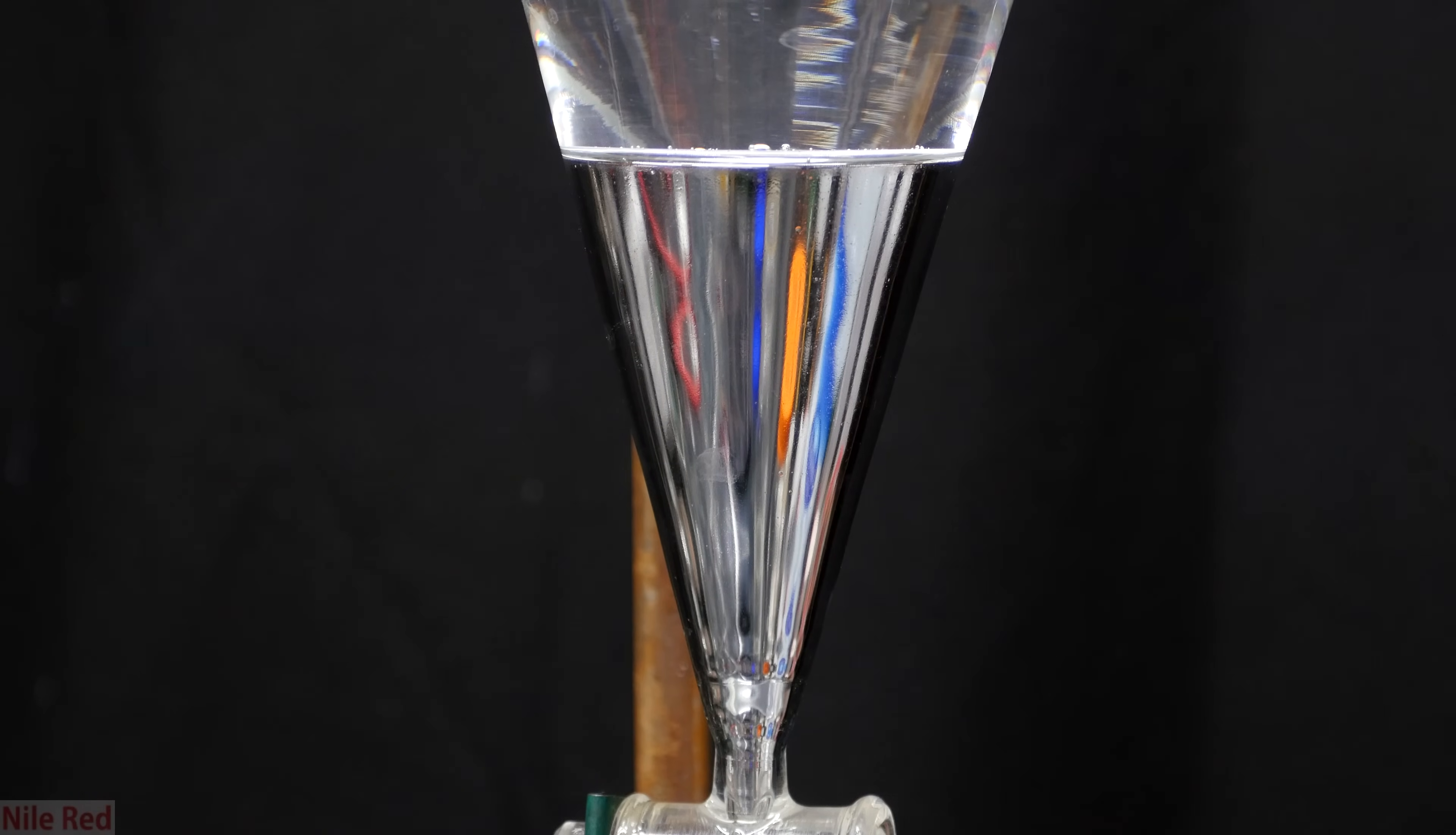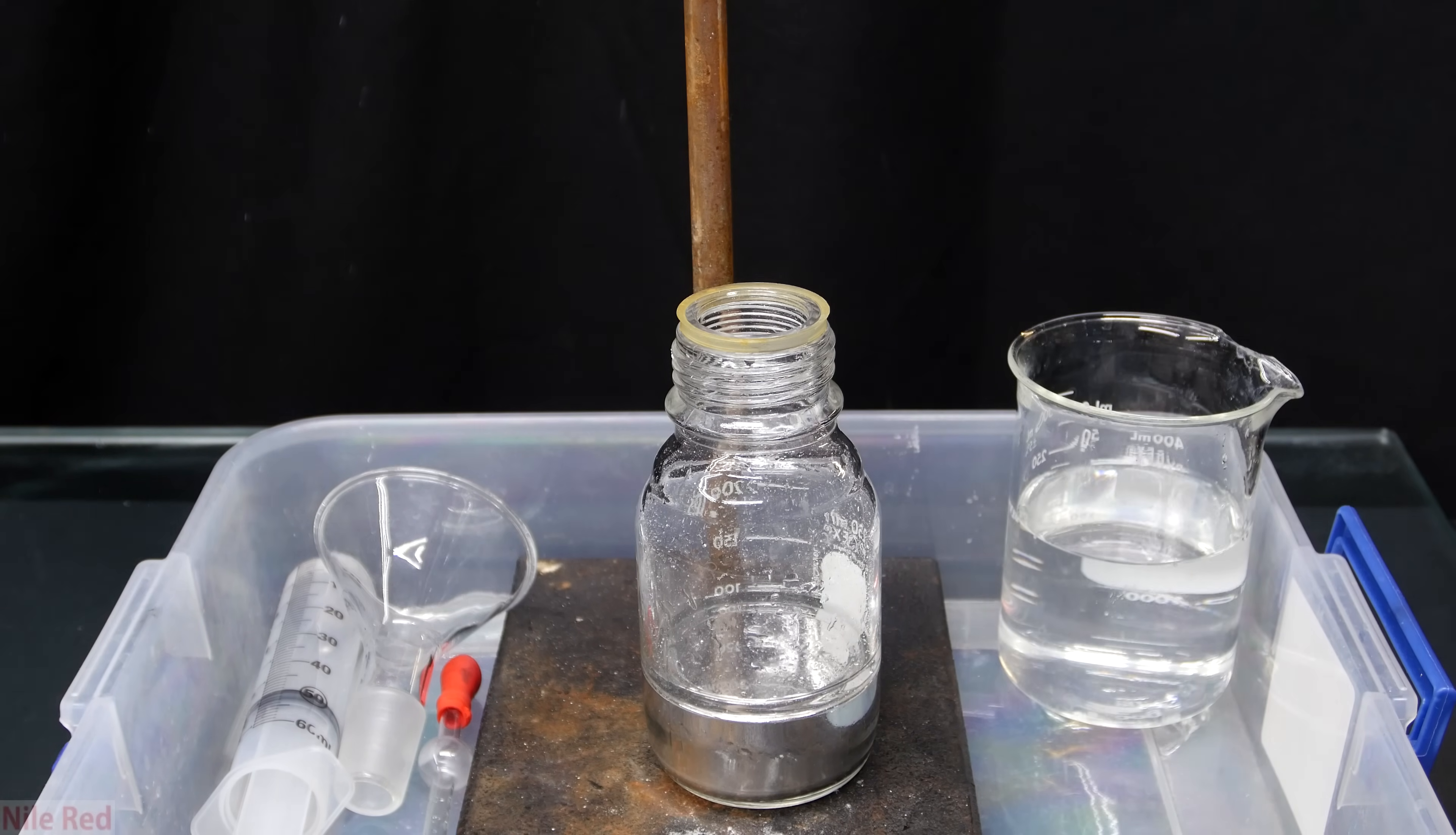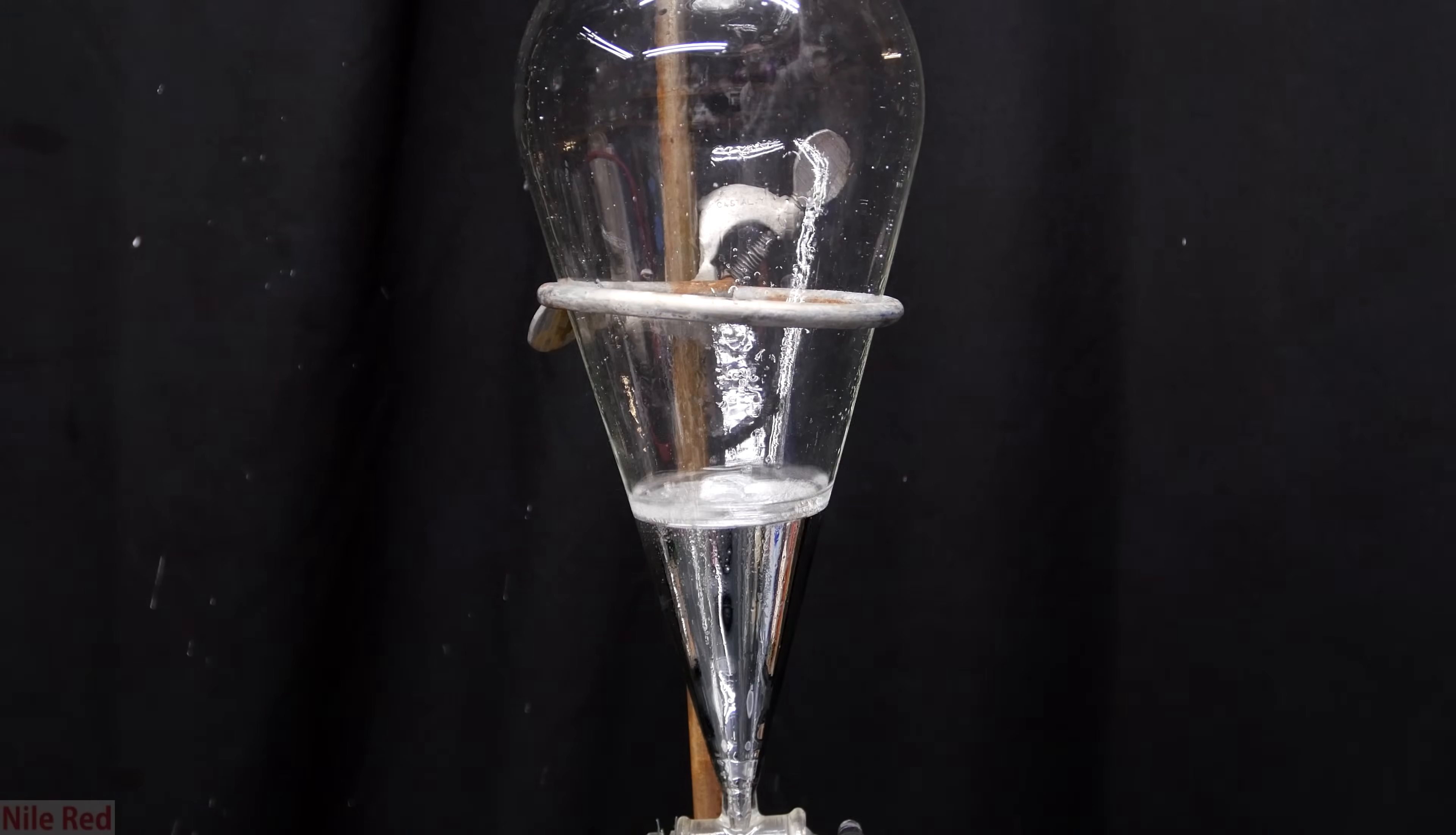After about an hour, it looked a lot cleaner and it didn't really look like there was any oil floating around. The now nearly oil-free mercury was then drained. The sodium hydroxide washing still in the separatory funnel was poured into a waste beaker. The separatory funnel was washed with a little bit of water and then the mercury was poured back into it.